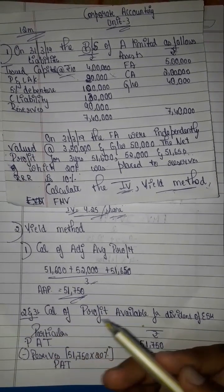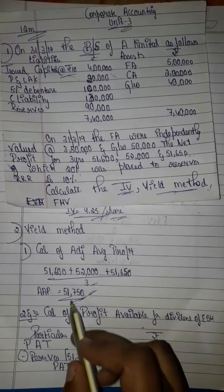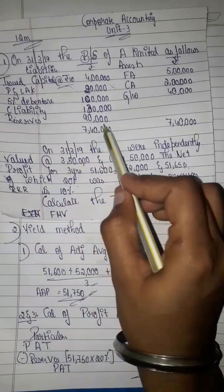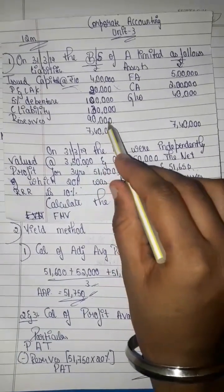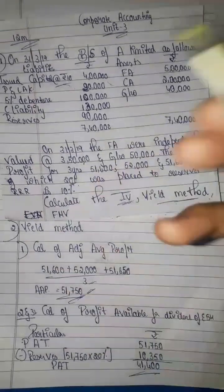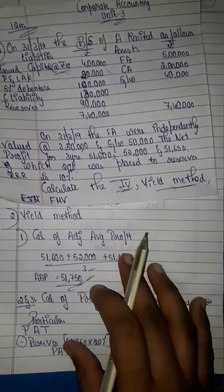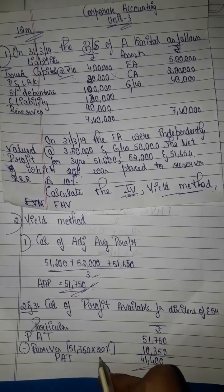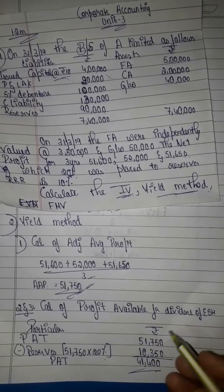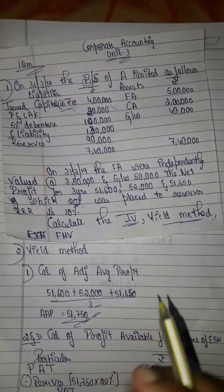This is the adjusted average profit of 51,750. Next, we calculate profit available for dividend to equity shareholders. From 51,750 we deduct 20% transferred to reserves — that is 10,350 — giving us 51,750 minus 10,350 equals 41,400, plus preference share dividend is also deducted to get the final amount.